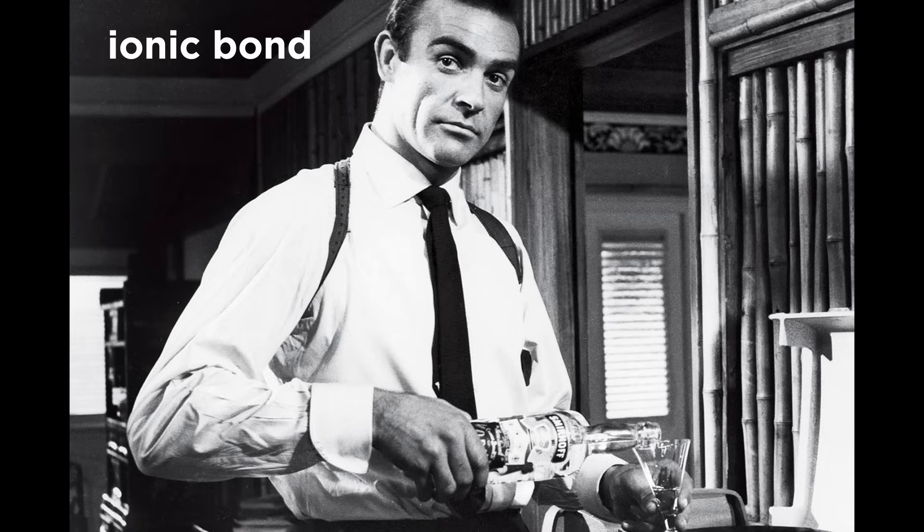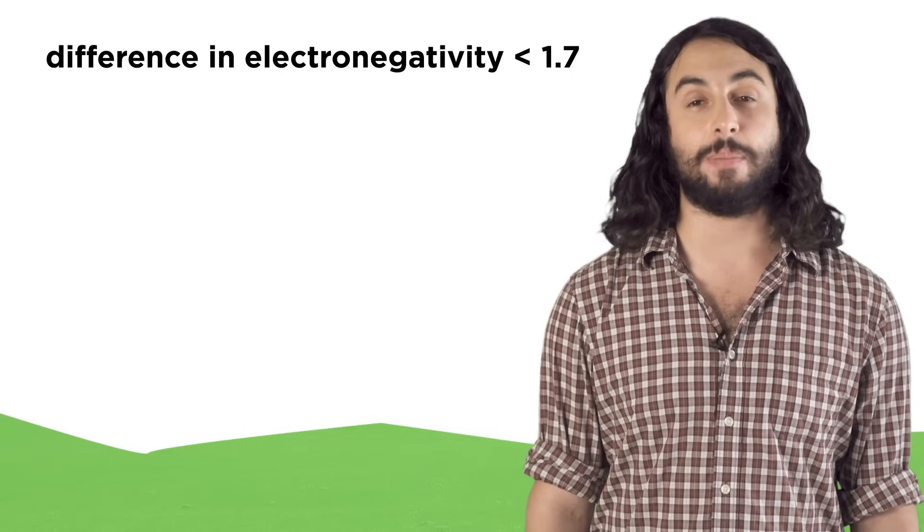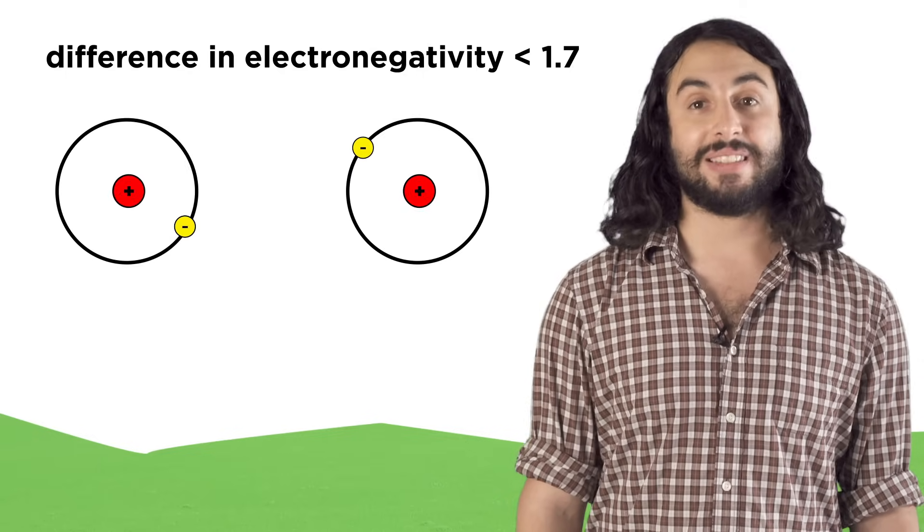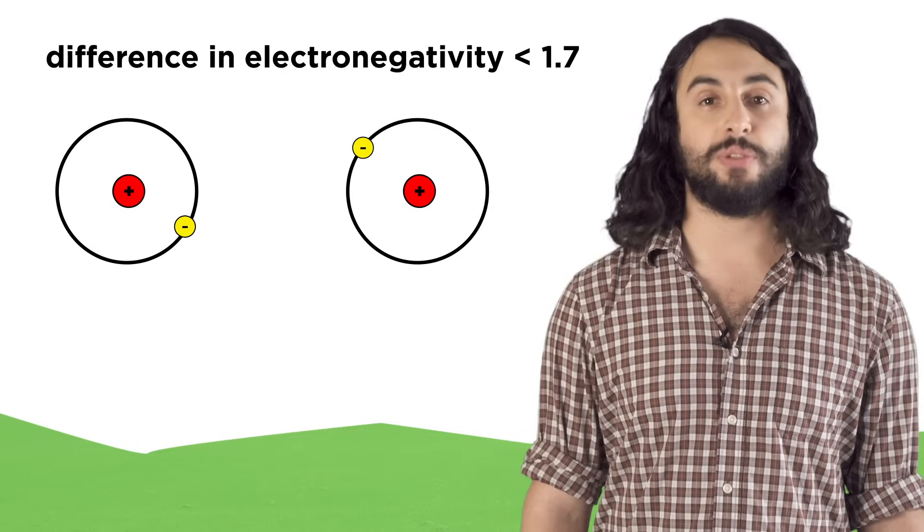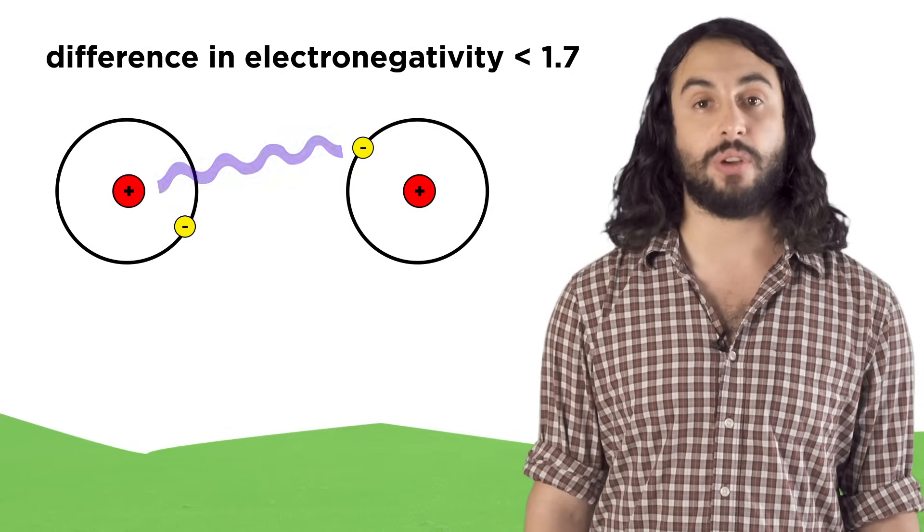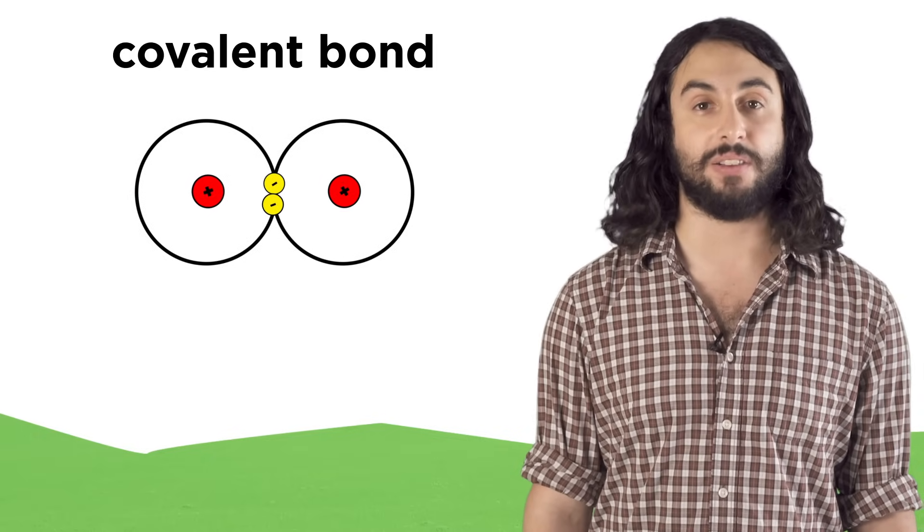Speaking of shared electrons, if the difference in electronegativity between the two atoms is less than about 1.7, no electrons are stolen, but instead the two atoms share two electrons. The electron from this atom feels the attraction from the other nucleus, and so does the electron from this atom, so the atoms share the two electrons to form a covalent bond.